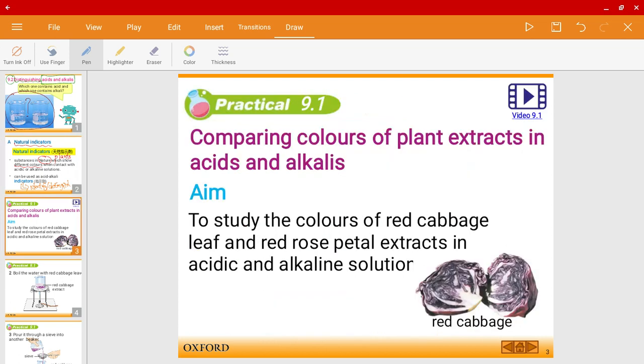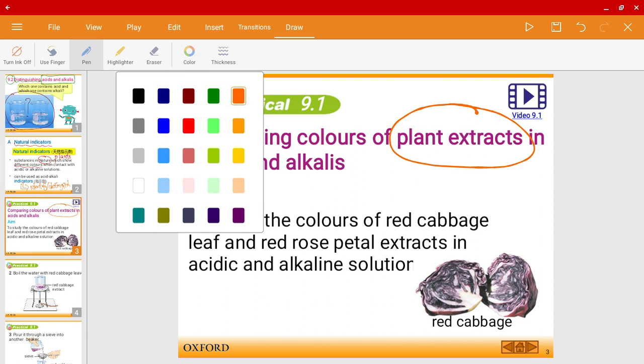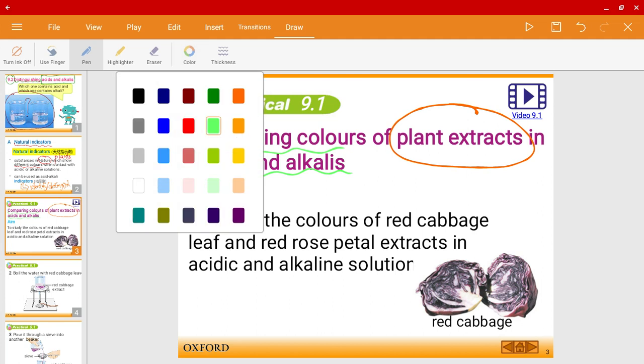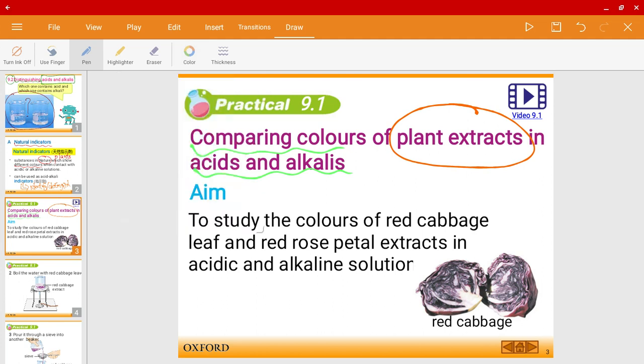So let's look at one experiment that will allow us to understand this better. In this experiment, we'll be using plant extracts to compare the colors between acids and alkalis. So in this particular experiment, we'll be using red cabbage.